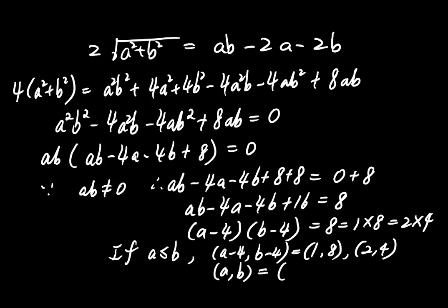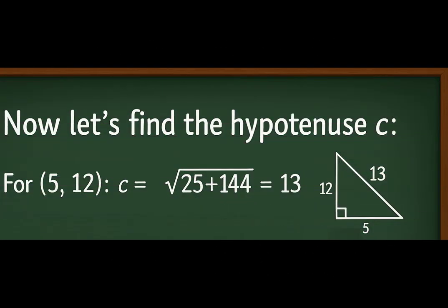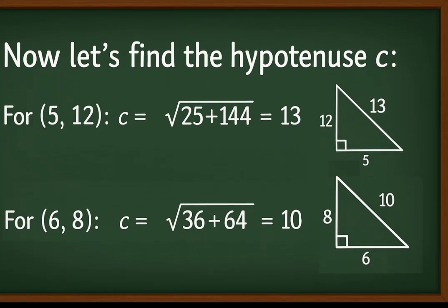This gives us possible values for A and B as 5 and 12, 6 and 8. Now let's find the hypotenuse C. For 5 and 12, C equals 13. For 6 and 8, C equals 10. These are the only two solutions.